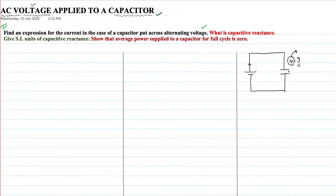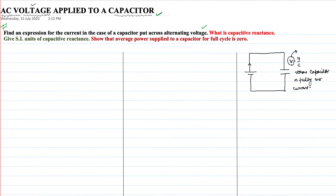The increase in potential between the plates will oppose the growth of current. When the capacitor is fully charged, the current across the circuit will fall to zero. So when the capacitor is fully charged, the current in the circuit will be zero.